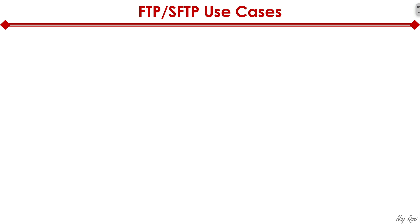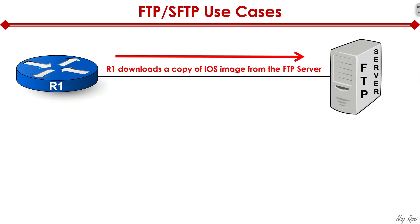For FTP use cases, you may have a router connected to an FTP server that downloads a copy of an IOS image centrally stored there. Many users maintain a centralized repository of all IOS images, keeping what are called golden images — images approved by the company and certified to work within the customer's environment. You test them in the lab, and once confirmed to work flawlessly, you save those golden images in the centralized FTP repository so devices can download them. In that case, R1 would be an FTP client.